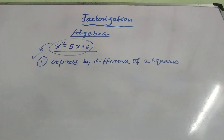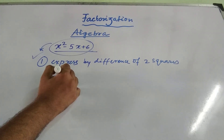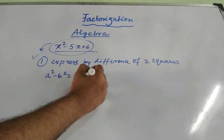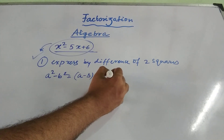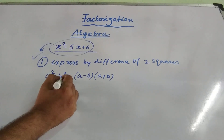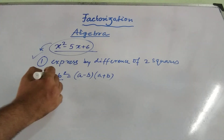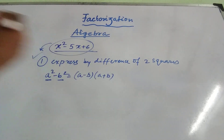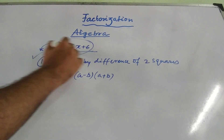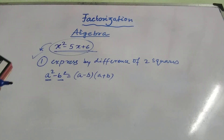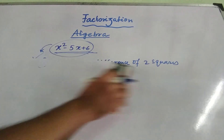First I will concentrate on expressing by the difference of two squares. Before that, there is a standard formula for a² minus b², which can be written as (a - b)(a + b). This expression represents the difference of squares of two variables a and b. So a² minus b² equals (a - b)(a + b). Our target will be to express x² minus 5x plus 6 as a difference of two squares.